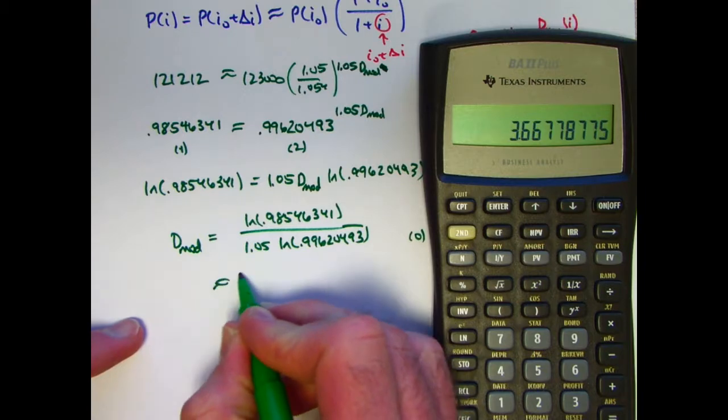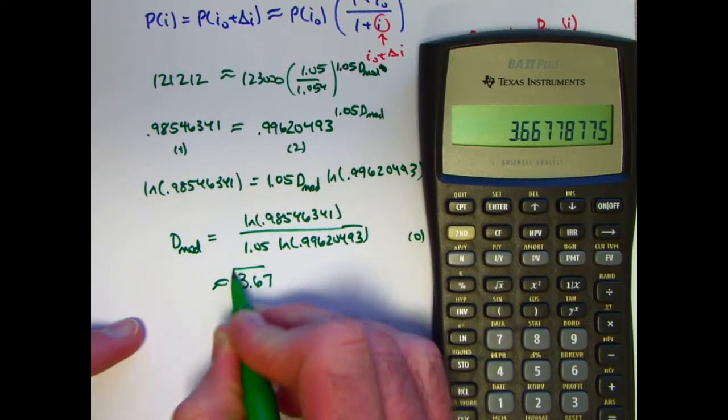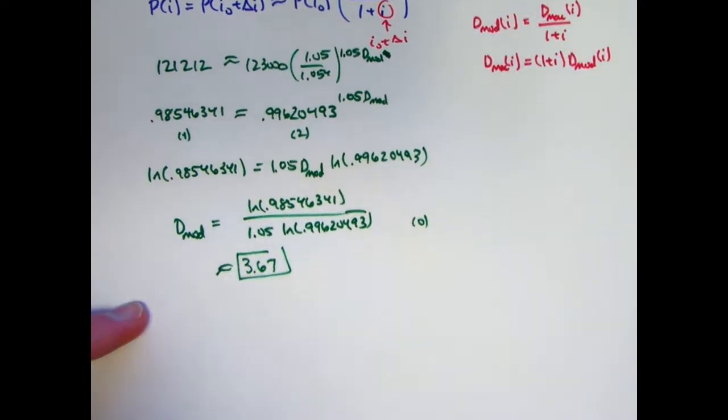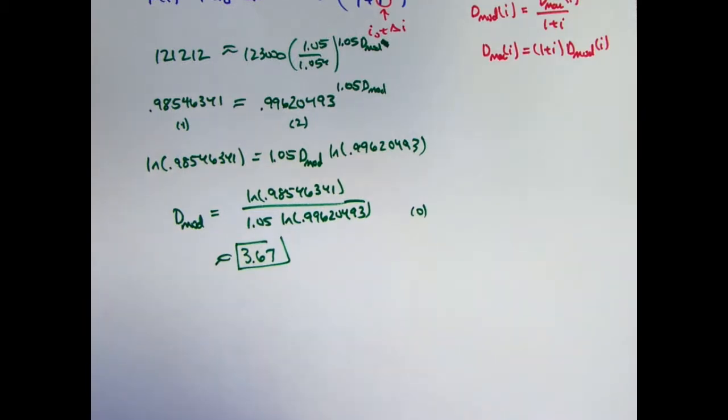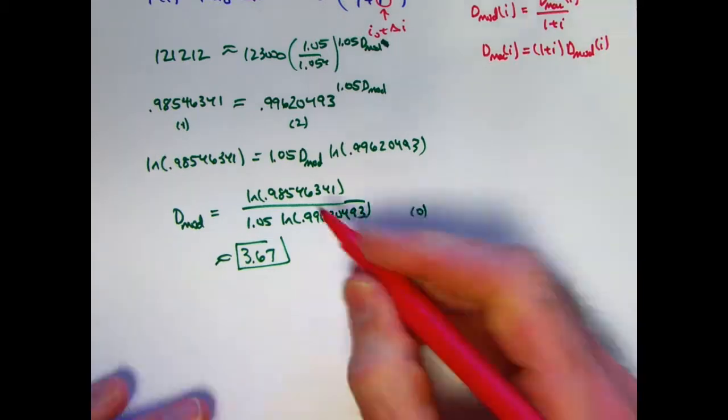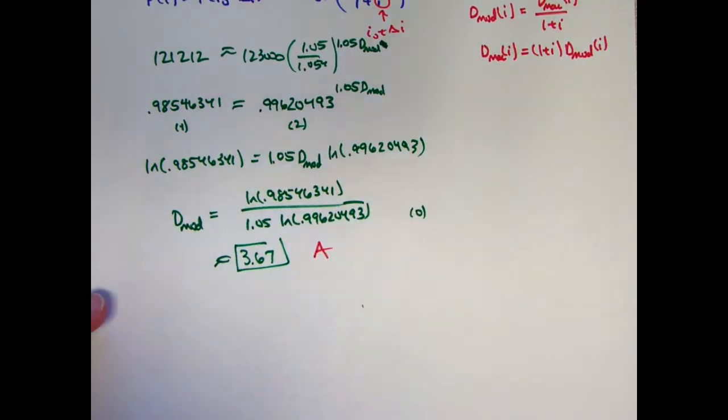And you get about 3.67 for this modified duration. The units would be in units of time, which would be years in this case. And that is the correct answer. That is choice A on sample exam from 2017.